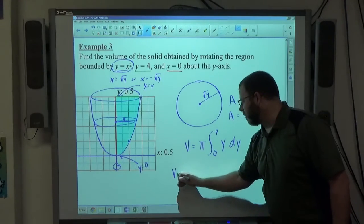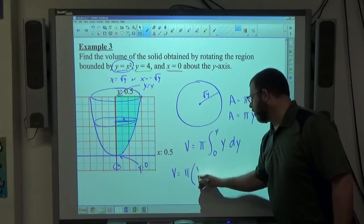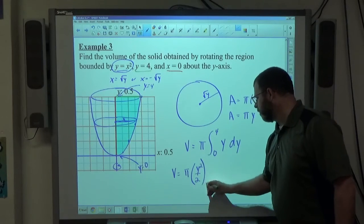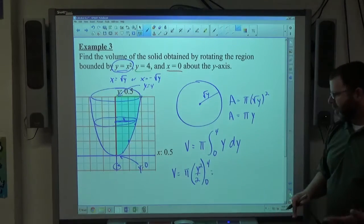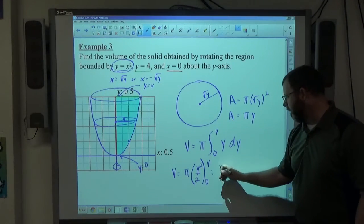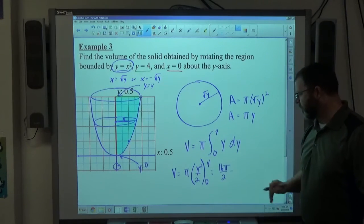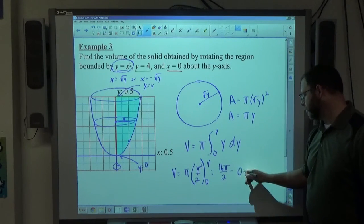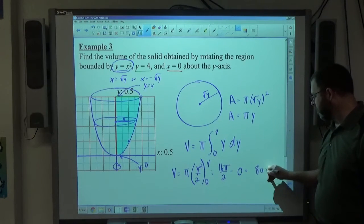So the volume is going to be pi times y squared over 2 from 0 to 4. If I put 4 in first, I'm going to get 16 pi over 2. If I put 0 in second, I'm going to get 0. So the answer is 8 pi cubic units.